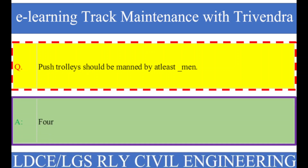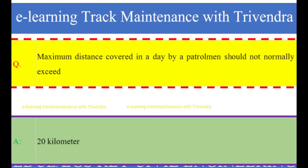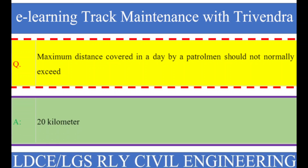Question number 61: Maximum distance covered in a day by a patrolman should not normally exceed? The right answer is 20 kilometers.